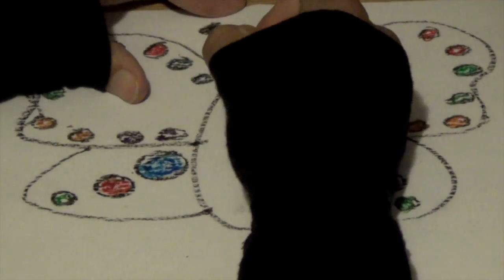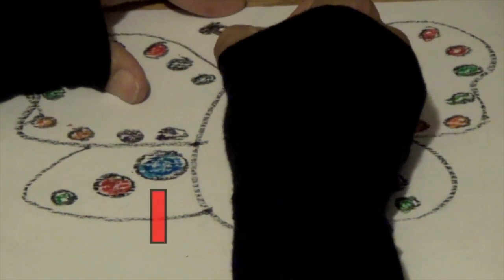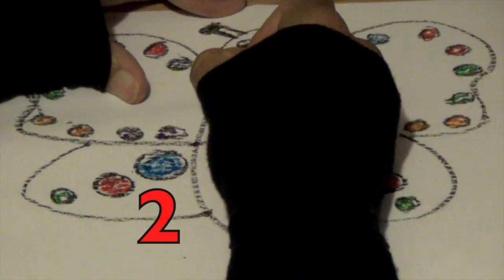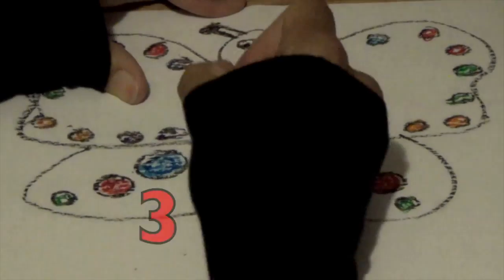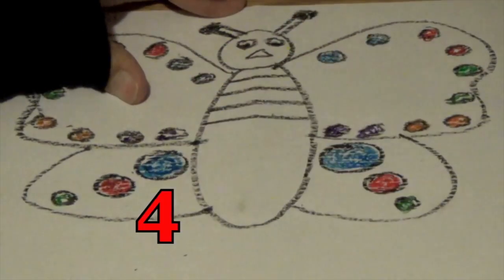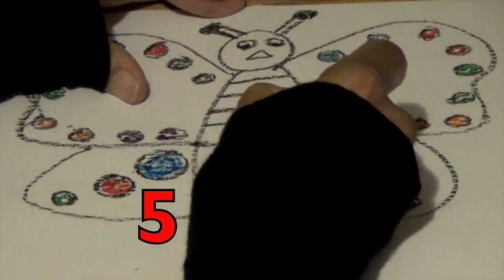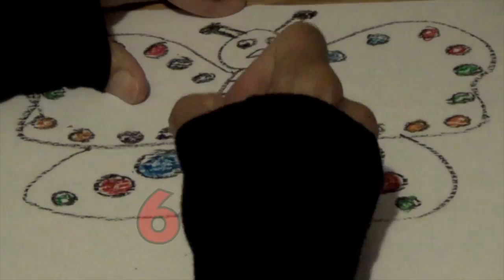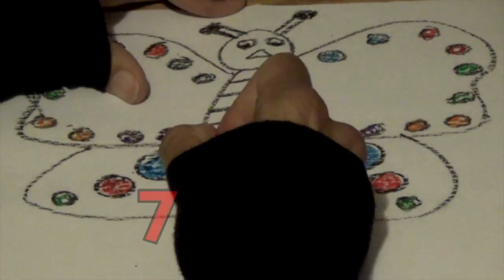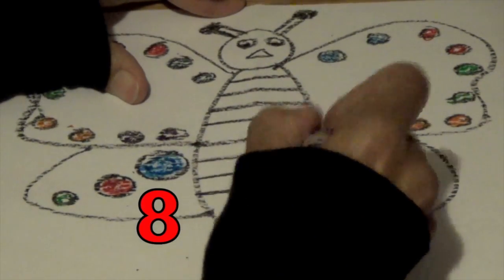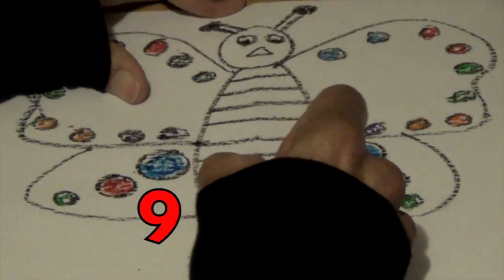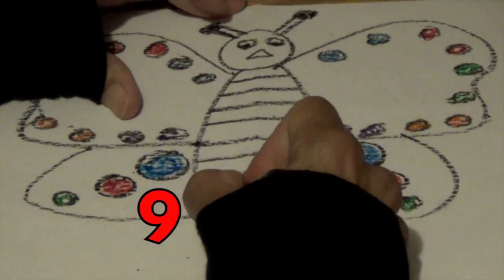Now we're going to go on the body. We're going to draw ten lines. Count with me. One, two, three, four, five, six, seven, eight, nine, ten.